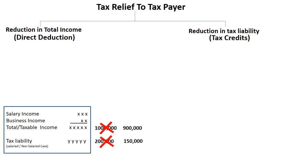From the previous lecture, we have the concept of five heads of income and total and taxable income. Now, certain transactions will give you tax relief — either in the form of reduction in total and taxable income, or relief in the form of tax liability reduction. For understanding purposes, we have two examples: donation and zakat. If during the year you pay donation or zakat, then on the basis of these transactions, taxable income comes down from 10,00,000 to 9,00,000.